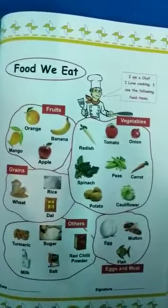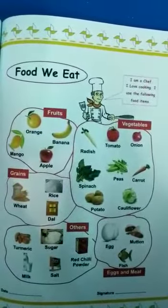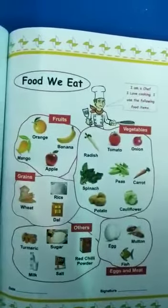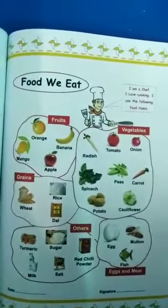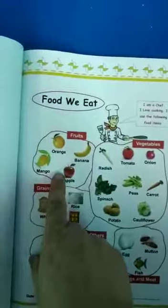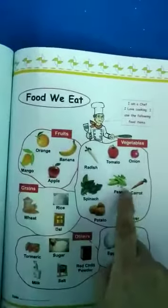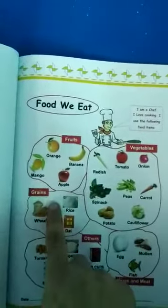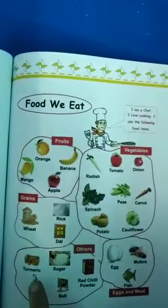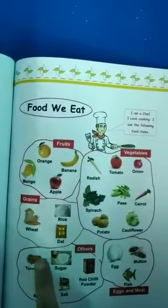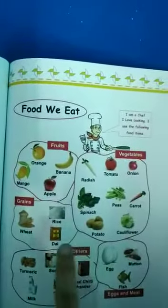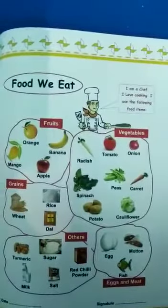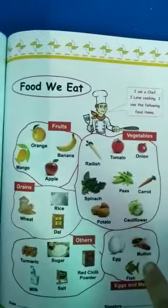Now, what is healthy food? Let's recap once again. Healthy food is a combination of fruits, vegetables, grains and dairy products and spices. Right? Some of us can also add eggs and meat in it. Okay?